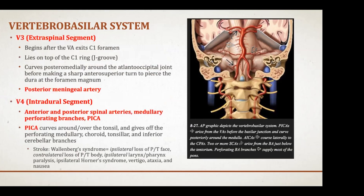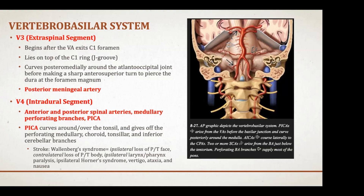The V3 or extraspinal segment begins after the vertebral artery exits the C1 foramen, lying on top of the C1 ring in the J-groove. It curves posteromedially around the atlanto-occipital joint, then makes a sharp anterosuperior turn to pierce the dura at the foramen magnum. The big branch from V3 is the posterior meningeal artery. The V4 or intradural segment gives off the anterior and posterior spinal arteries and medullary perforating branches.